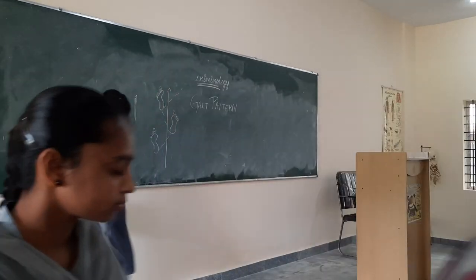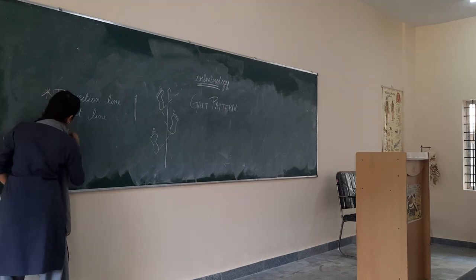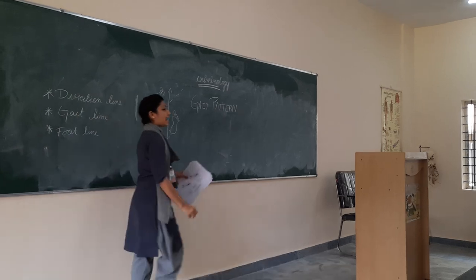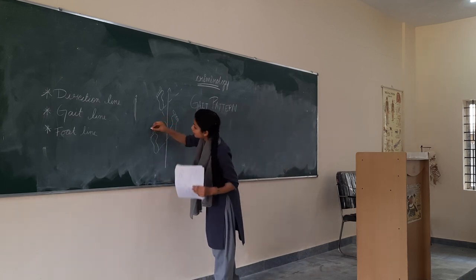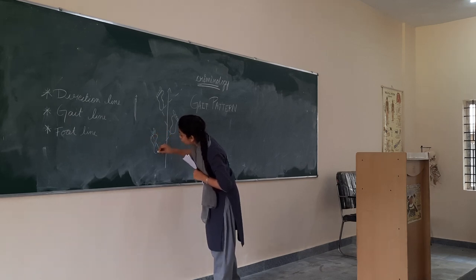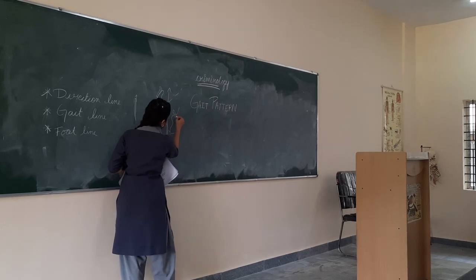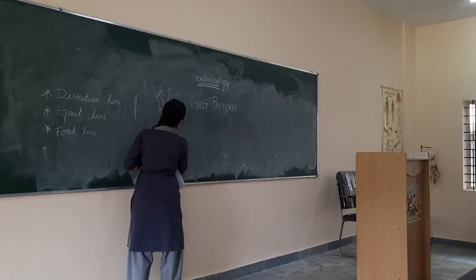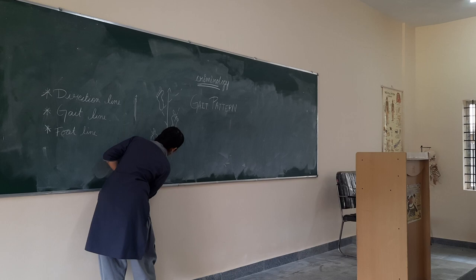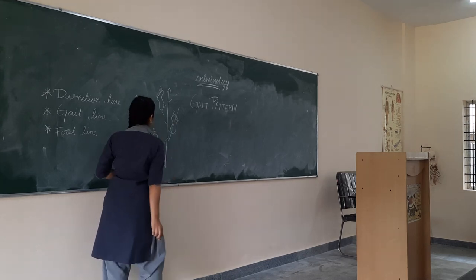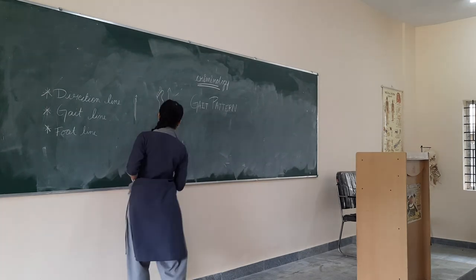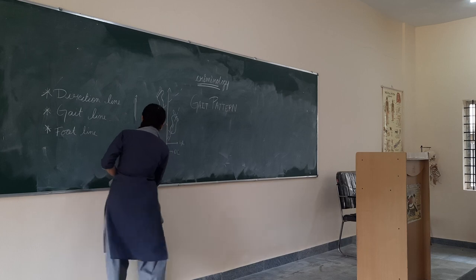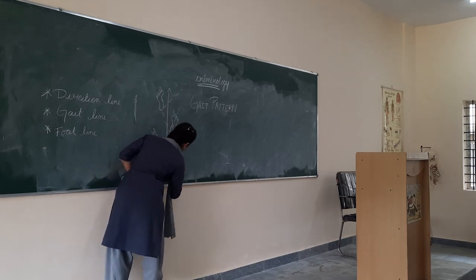Next is the foot line. This is an axis — a longitudinal axis which passes from the second toe to the centre of the heel. If I extend this line, the gait line and foot line form an angle. This is the direction line, this is the gait line, and this is the foot line.